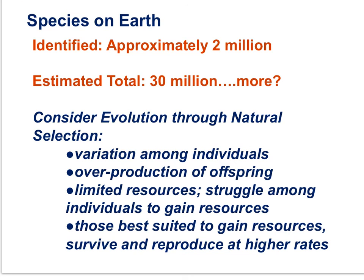On Earth, scientists have documented approximately 2 million species, but there are estimated to be 30 million — maybe more; some have estimated up to 100 million different species. The diversity on Earth has been generated over long spans of time through the process of natural selection: where there's variation among individuals, there's an overproduction of offspring and limited resources setting up a struggle among individuals, and those best suited to gain resources in the local environment survive and reproduce at higher rates. We will look carefully at natural selection in the Biodiversity Conservation Part 2 movie.